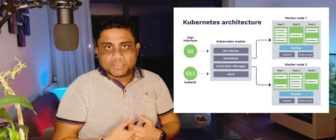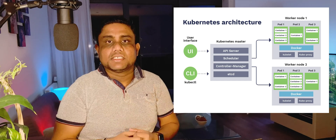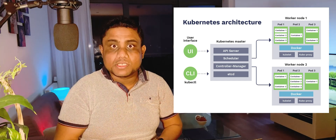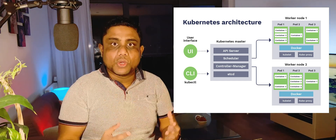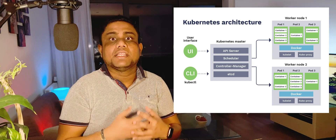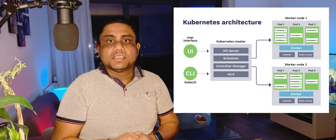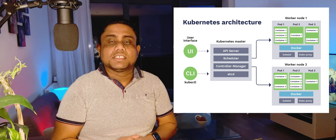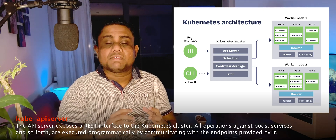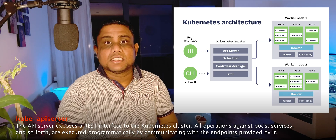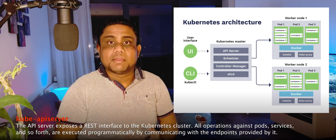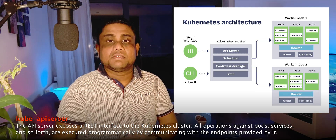A Kubernetes cluster consists of a set of worker machines called nodes. Inside the nodes, we deploy the application components as pods. All of these pods and nodes will be managed by the control plane components. The Kubernetes control plane consists of multiple components, such as the kube-apiserver — all the functionalities in the Kubernetes cluster will be exposed as an API through the kube-apiserver.